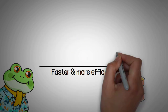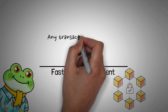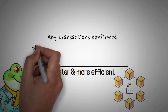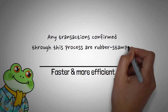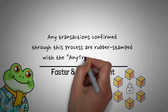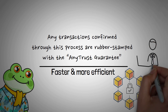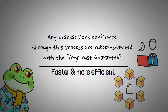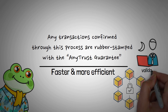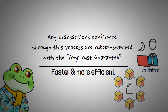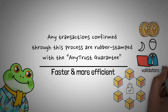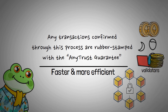According to Arbitrum, any transactions confirmed through this process are rubber-stamped with the AnyTrust Guarantee. This is when all the validators agree on the validity of transactions contained within a rollup. These validators stake Ethereum before they can confirm transactions, and by putting money on the line, they are incentivized to act honestly.